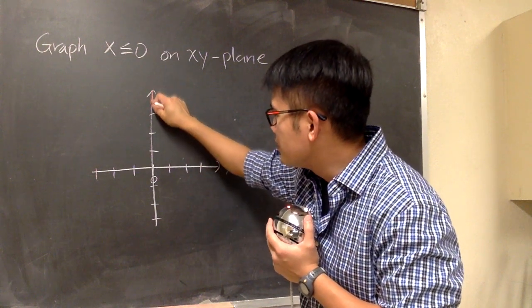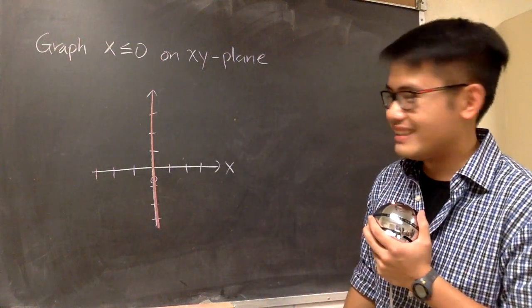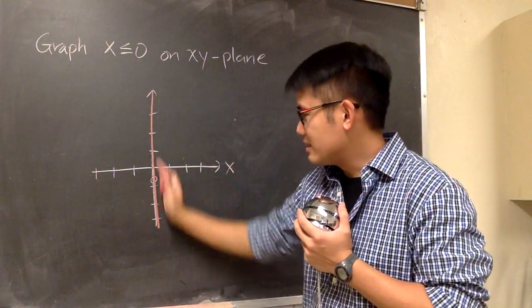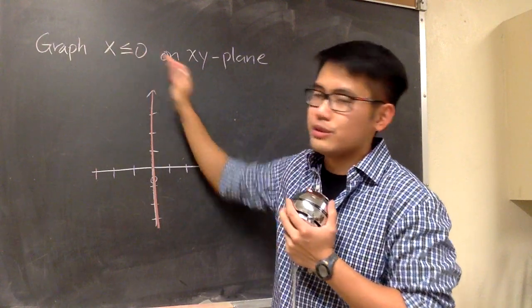And it happens to be the same as the y-axis. But anyways, this right here is x is equal to 0. But I want to have x is less than or equal to 0.